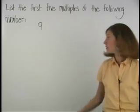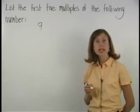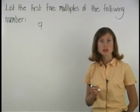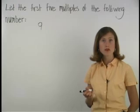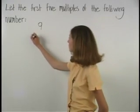To find the first five multiples of nine, multiply nine by the first five whole numbers: zero, one, two, three, and four.